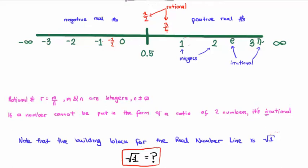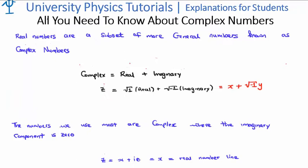And that poses the question: what is the square root of minus 1? Well it turns out that the real numbers we are all familiar with aren't the most general type of number, and we refer to the most general type of number as a complex number.